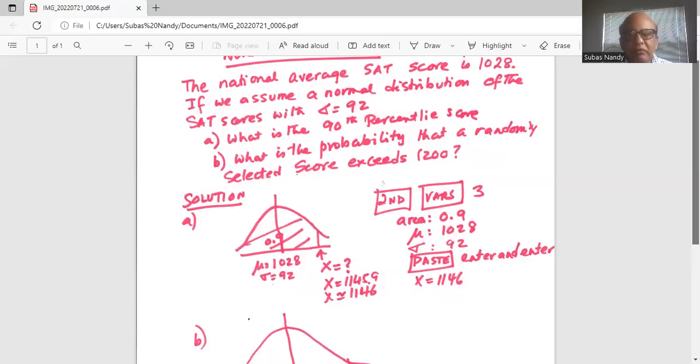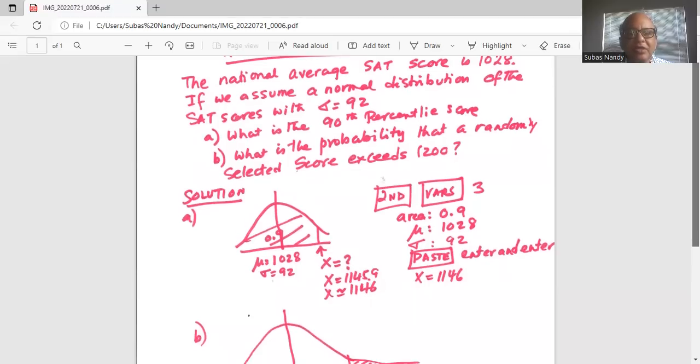And answer X is 1145.9, which can be rounded to 1146. What does it mean? That means 90% of the scores are below 1146, or the 90th percentile score is 1146.